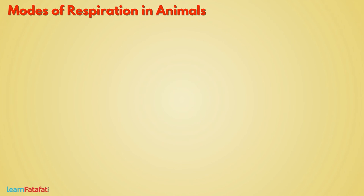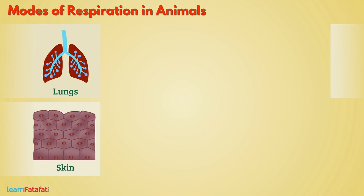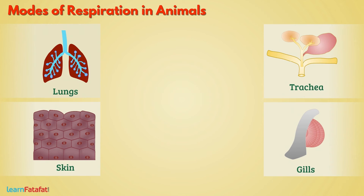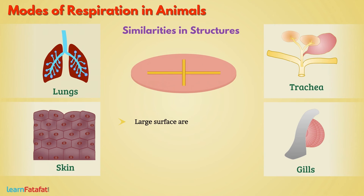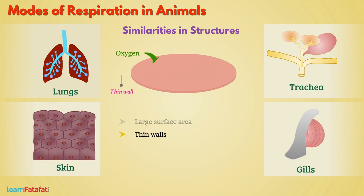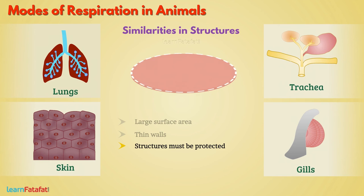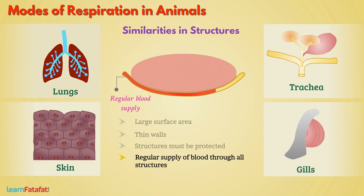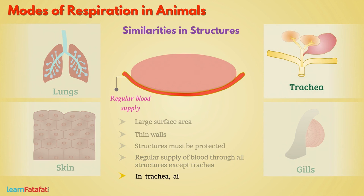Though there are different structures such as lungs, skin, trachea, or gills for breathing, these structures have some similarities. All structures have a large surface area which ensures sufficient intake of oxygen. These structures have thin walls so that gaseous exchange can take place. These structures must be protected. Regular supply of blood through all structures except trachea is essential for proper gaseous transport to cells. In the case of trachea, air reaches the cells directly without the need of blood.